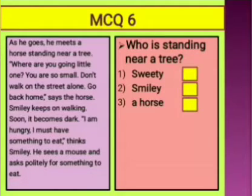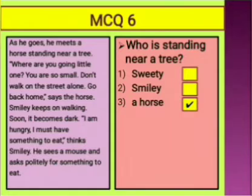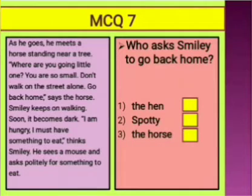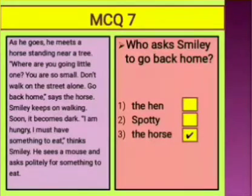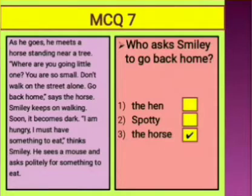The question is: who is standing near a tree — Sweetie, Smiley, or a horse? The answer is a horse. A horse is standing near the tree, so you tick 'a horse.' The next question is: who asks Smiley to go back home — the hen, Spotty, or the horse? We just read that the horse tells Smiley to go back home and not walk on the street alone because he is very small. So the horse is the correct answer and you put a tick in front of 'the horse.'